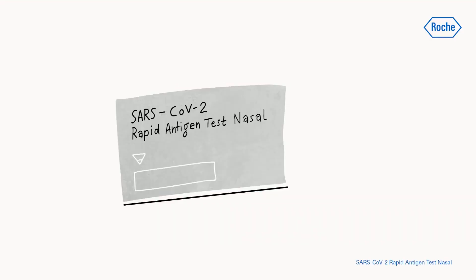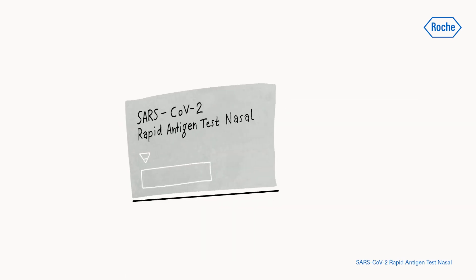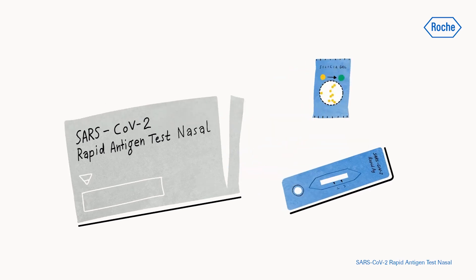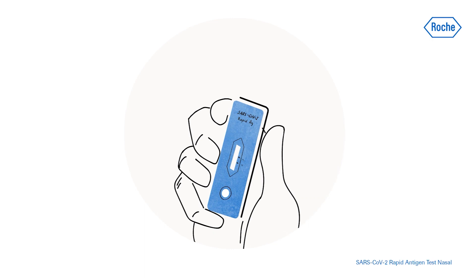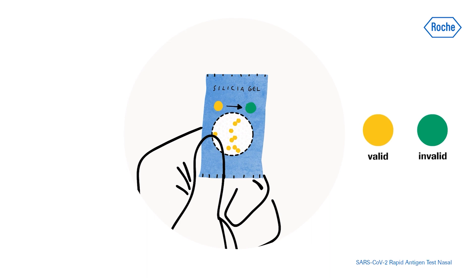For each test, check the expiry date on the back of the foil pouch. Do not use the test if the expiry date has passed. Open the foil pouch and remove the test device and the desiccant package. Ensure that the test device is undamaged and that the desiccant status indicator is yellow.